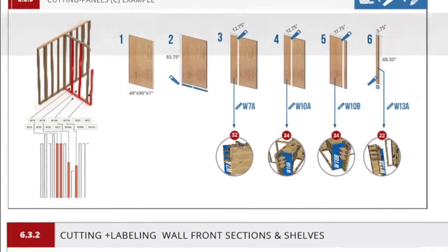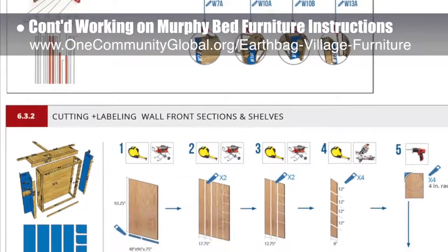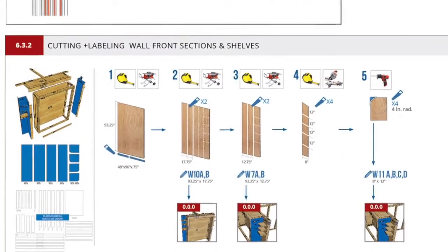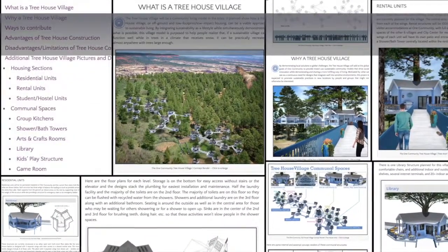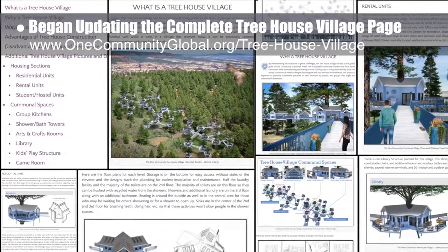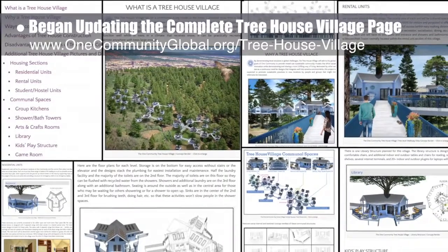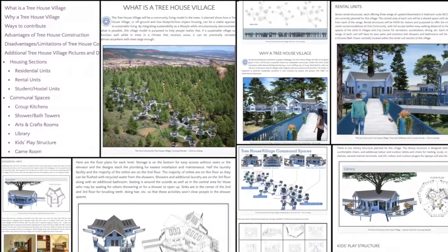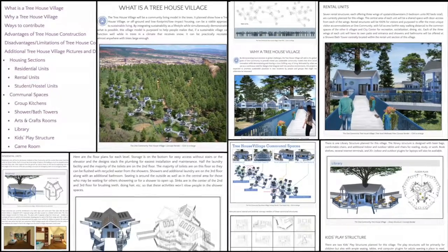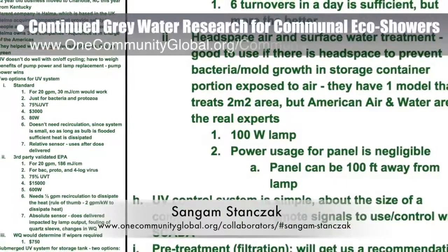The core team continued working on the murphy bed instructions, working on page 6.3.2 — wall frame panels assembly — to match the other pages as shown here. The core team also finished the first half of updating the complete treehouse village Pod 7 open source hub, which included all new menus, formatting, and updated content covering the what, why, and description sections for every structure within this village, as shown here.